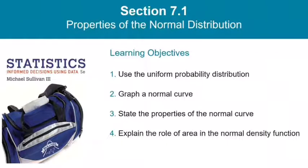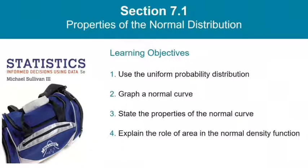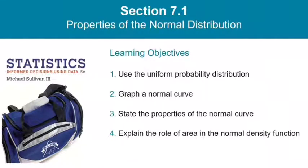Hello again, and welcome back to Statistics. Today we're in Section 7.1 talking about properties of the normal distribution. We're going to start off talking about the uniform probability distribution, but what I really want to get to is the normal curve. I'll show you how to graph a normal curve, talk about its properties, and discuss the role of area in the normal density function. This is a very important section, but it's not nearly as technical as it sounds.